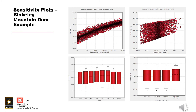Here is an example of a set of sensitivity plots for a dam. In the first plot at the top left, we see that the sampled inflow volume is positively correlated with the peak stage, which tells us that the sampled inflow volume is a driver for the peak stage, which is common. Next, we see the correlation plot for the starting stage at the top right, where we can see that the peak stage is not strongly correlated with the starting stage.